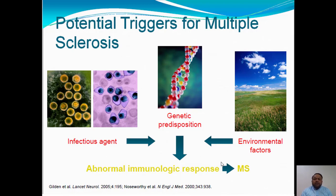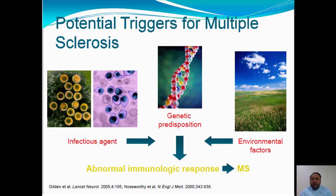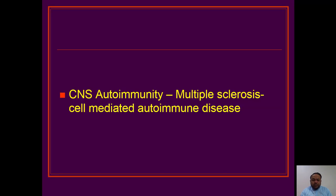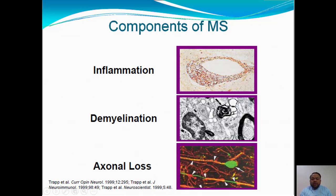The pathogenesis of multiple sclerosis is not well defined, but the postulated mechanism is that an infectious agent, genetic predisposition, or environmental factors — these three play simultaneously to form an abnormal immunologic response. This abnormal response then destroys the myelin sheath of the central nervous system, leading to multiple sclerosis. MS is a cell-mediated autoimmune disease. Pathologically, it is characterized initially by inflammation, followed by demyelination, and ultimately axon loss.